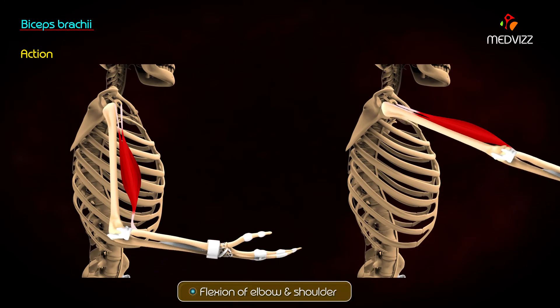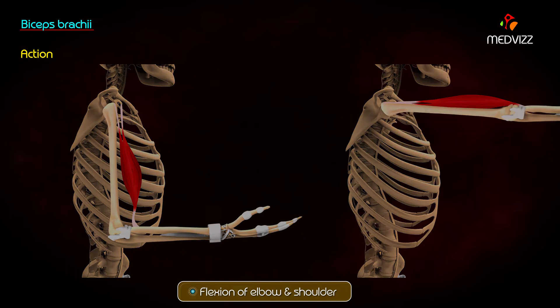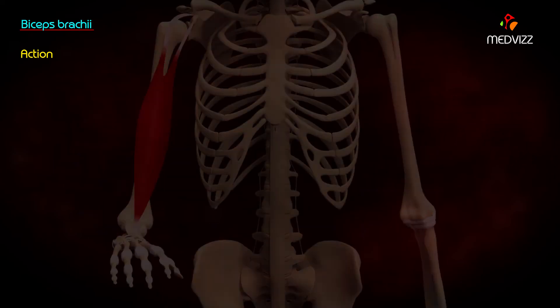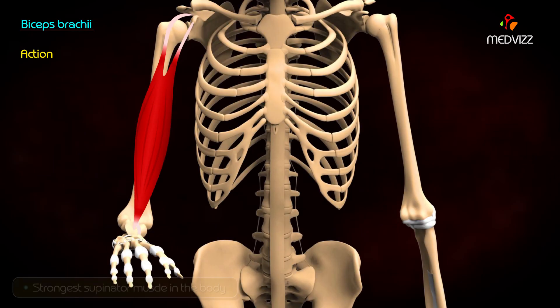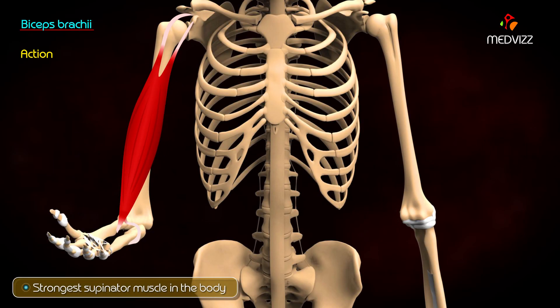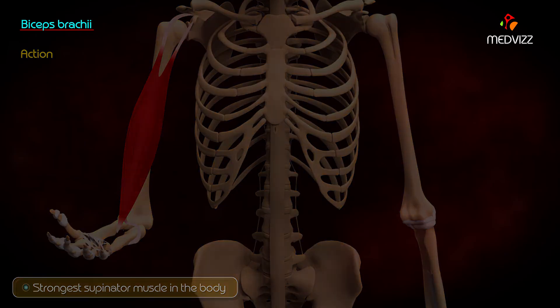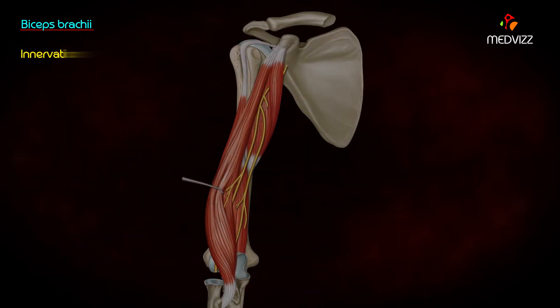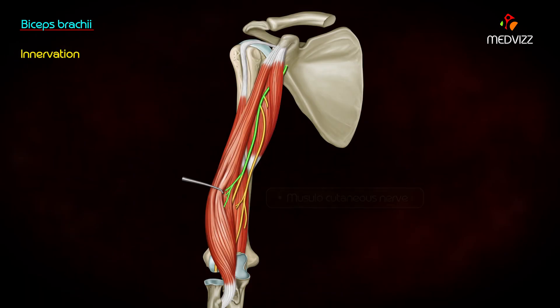Biceps brachii performs the following actions: supination of the forearm, flexion of the elbow, and flexion of the shoulder. It is the strongest supinator muscle in the body. It is innervated by the musculocutaneous nerve.